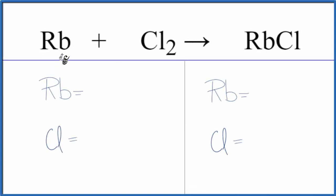In this video we'll balance the equation for Rb plus Cl2. This is rubidium plus chlorine gas. So let's count the atoms up first and balance the equation.